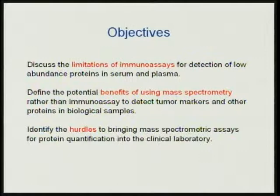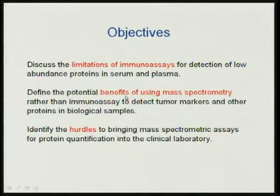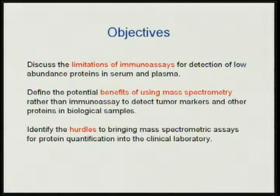The objectives: I really want to point out and provide the motivation for doing mass spectrometry on proteins in serum by pointing out the limitations of immunoassays. I'm going to spend a fair amount of time talking about thyroglobulin as an example, but I'll remind you over and over again that thyroglobulin is just an example. Immunoassays have problems. I'll talk about the benefits and potential benefits of using mass spectrometry, and then talk about some of the hurdles intermixed as we go through all of this.